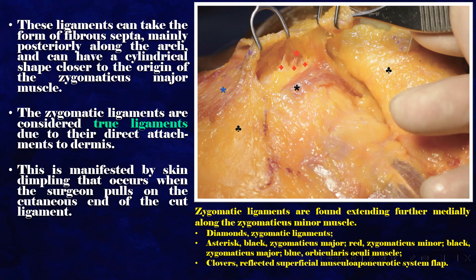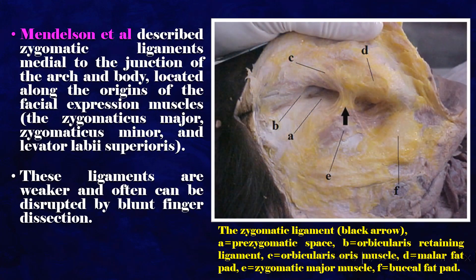This is manifested by skin dimpling that occurs when the surgeon pulls on the cutaneous end of the cut ligament. Mendelssohn et al. described zygomatic ligaments medial to the junction of the arch and body, located along the origins of the facial expression muscles — the zygomaticus major, zygomaticus minor, and levator labii superioris. These ligaments are weaker and often can be disrupted by blunt finger dissection.